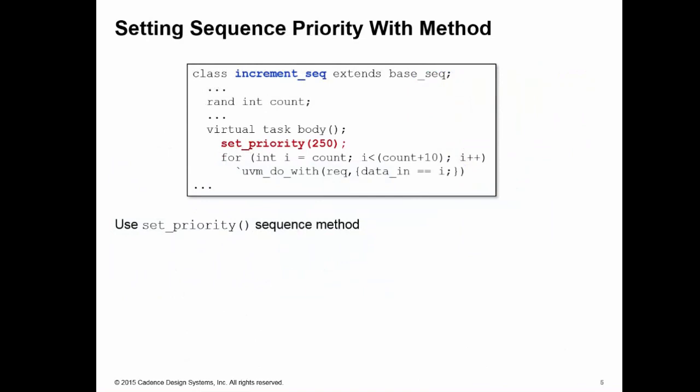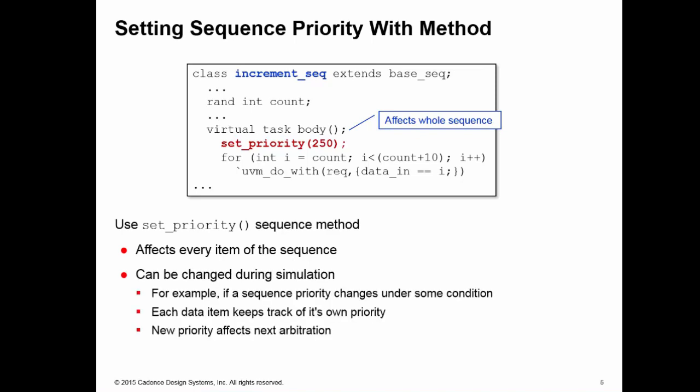You execute set_priority in the body of your sequence, and this affects every item generated by that sequence. You can call set_priority any time and change it during simulation. For example, you may hit some condition that changes the priority of items generated by a sequence. Each data item keeps track of its own priority and serves that priority to the arbitration mechanism when it's in the queue for selection. The default priority is 100, so if you want higher priority, pick a value greater than 100, like 250 here. This is the first way of setting priority for a sequence.